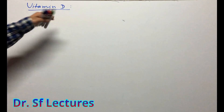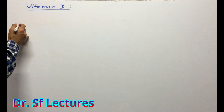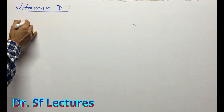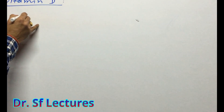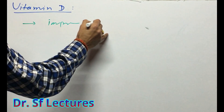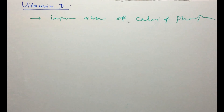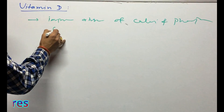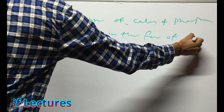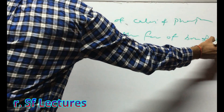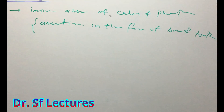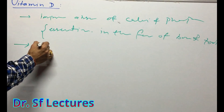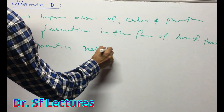What is the physiological role of Vitamin D? Vitamin D improves our absorption of calcium and phosphorus. It is essential in the formation of bone and tooth. Vitamin D also helps maintain our body systems.